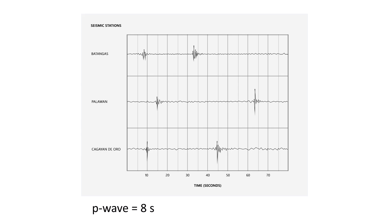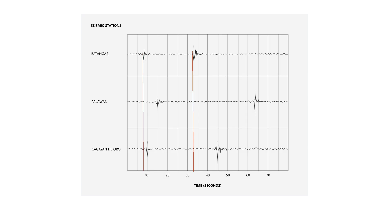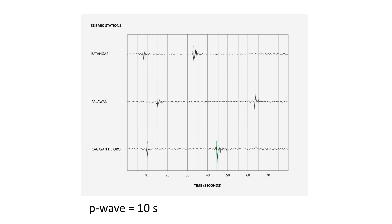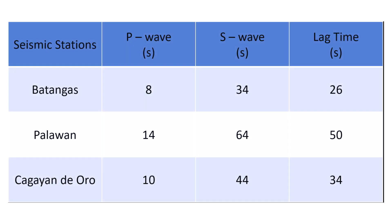Here are the answers. For Batangas: P wave is 8 seconds, S wave is 34 seconds. For Palawan: P wave is 14 seconds, S wave is 64 seconds. For Cagayan de Oro: P wave is 10 seconds, S wave is 44 seconds. These answers are summarized in the table.